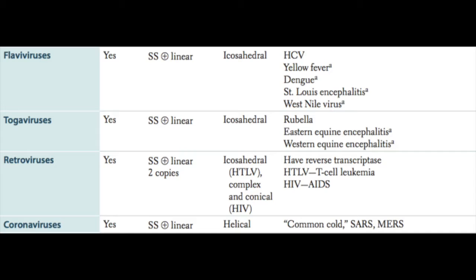Retroviruses have icosahedral capsid symmetry as well, with a linear RNA genome. They contain reverse transcriptase. We think about HIV classically as the retrovirus, but among this family is also HTLV, which can cause T cell leukemia. Coronaviruses, again single-stranded plus RNA genome, have a helical capsid symmetry and can cause the common cold and have also been associated with SARS.